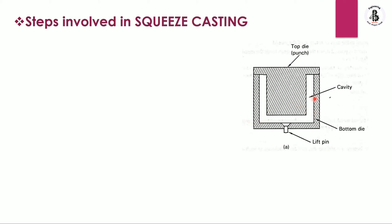Looking at the detailed steps: the white cavity shown here — this is our bottom die and this one is our top die, also called the punch. As per the required shape and size of the job, a bottom die and a top punch die are made, and in between them is the required cavity. The ejector pin, also called the lift pin, is used to eject components after solidification.